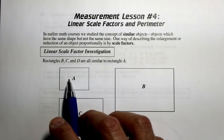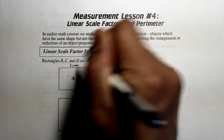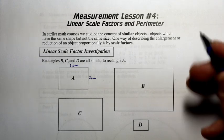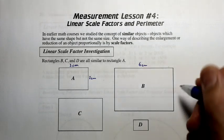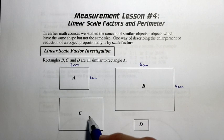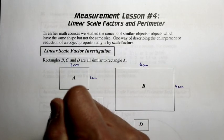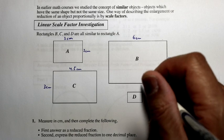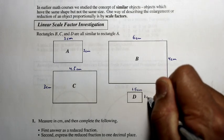Let's do some measuring. For rectangle A, we're going to determine the length. When we measure it with a ruler, we get 3 centimeters, and the width is 2 centimeters. For rectangle B, we get 6 centimeters in length and 4 centimeters in width. For rectangle C, the length is 4.5 centimeters and the width is 3 centimeters. For rectangle D, the length is 1.5 centimeters and the width is 1 centimeter.